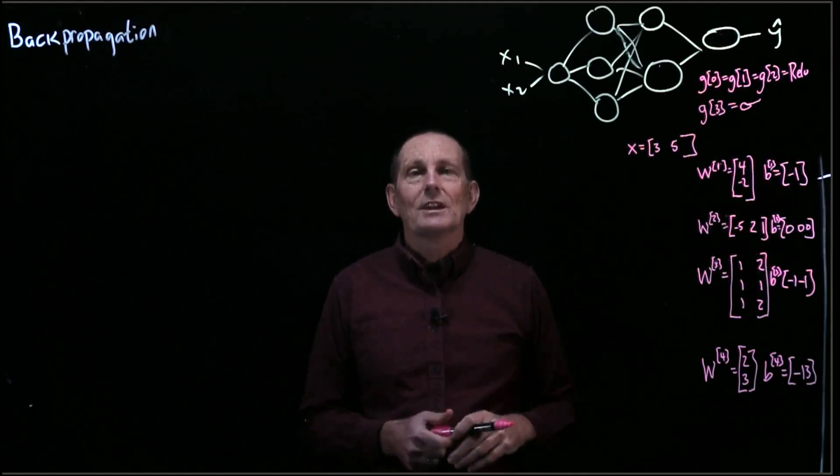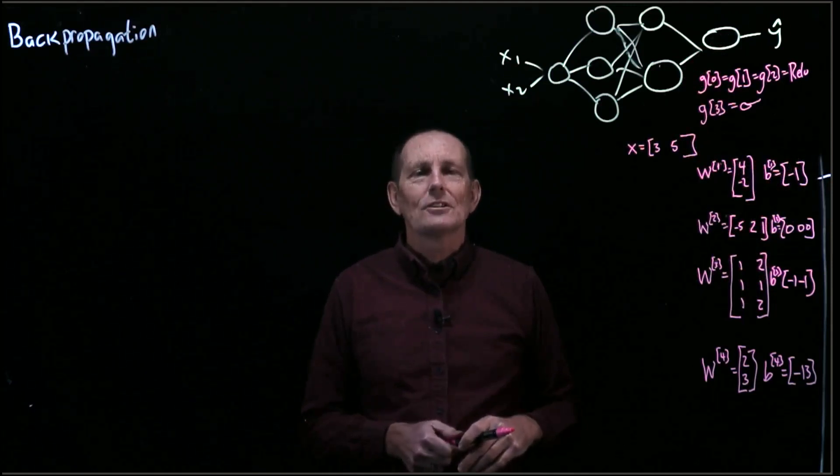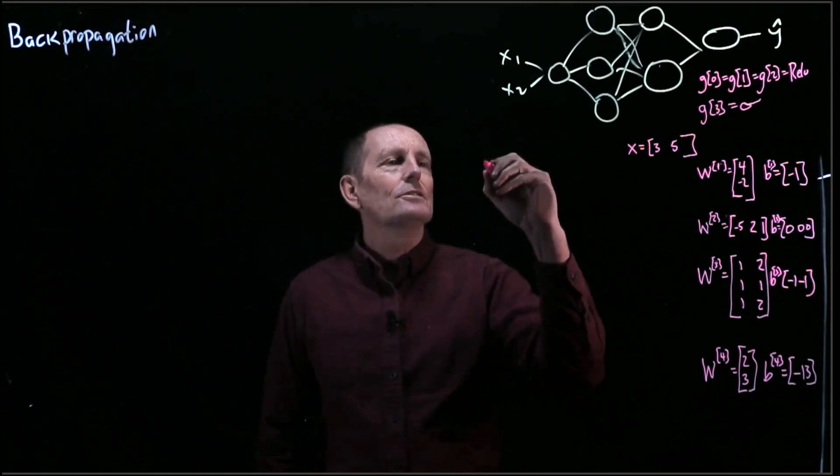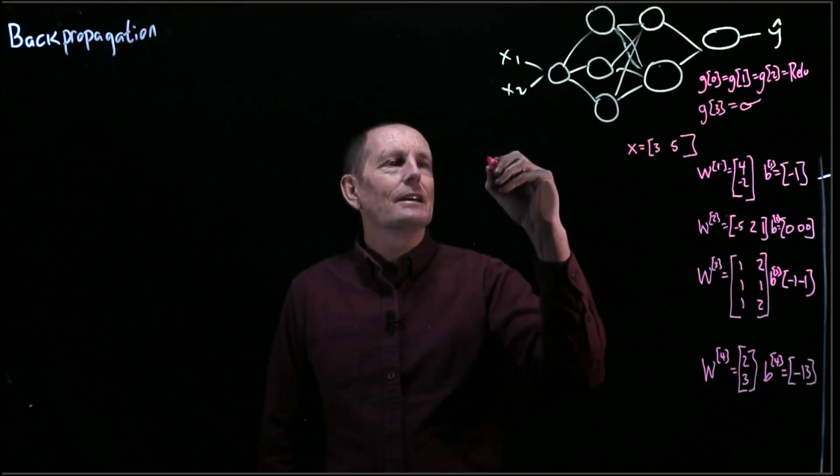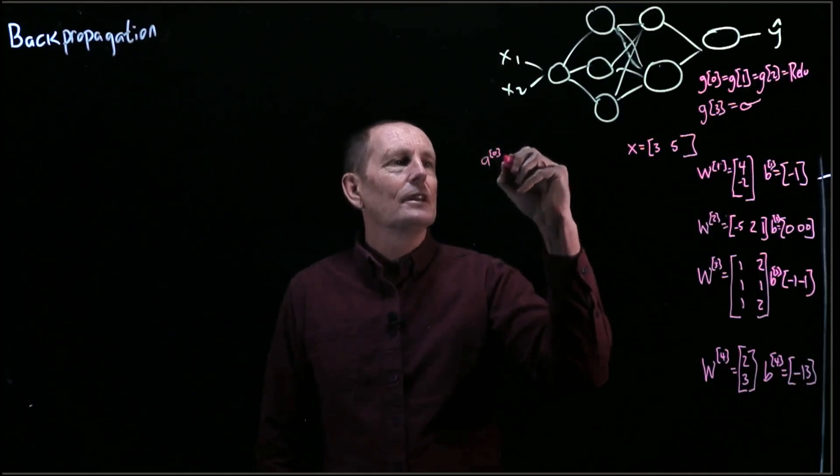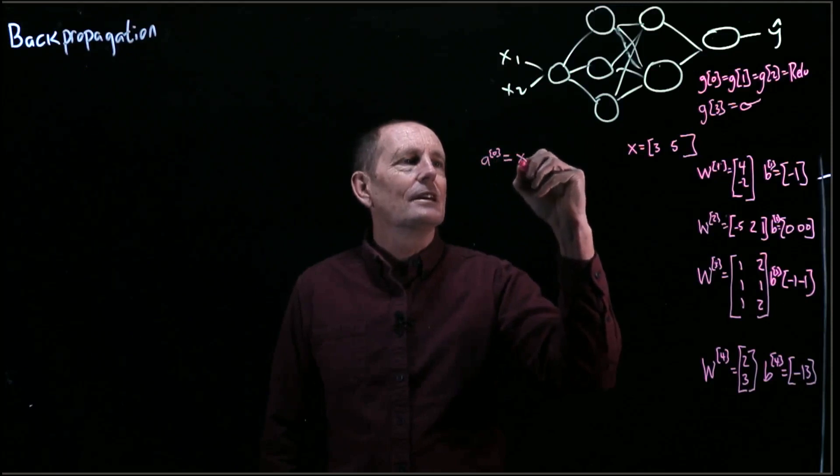So in order to do backpropagation, the first thing we actually need to do is forward propagation. So let's just go ahead and do that. So the first thing we're going to do is say A₀ is just the same thing as X.